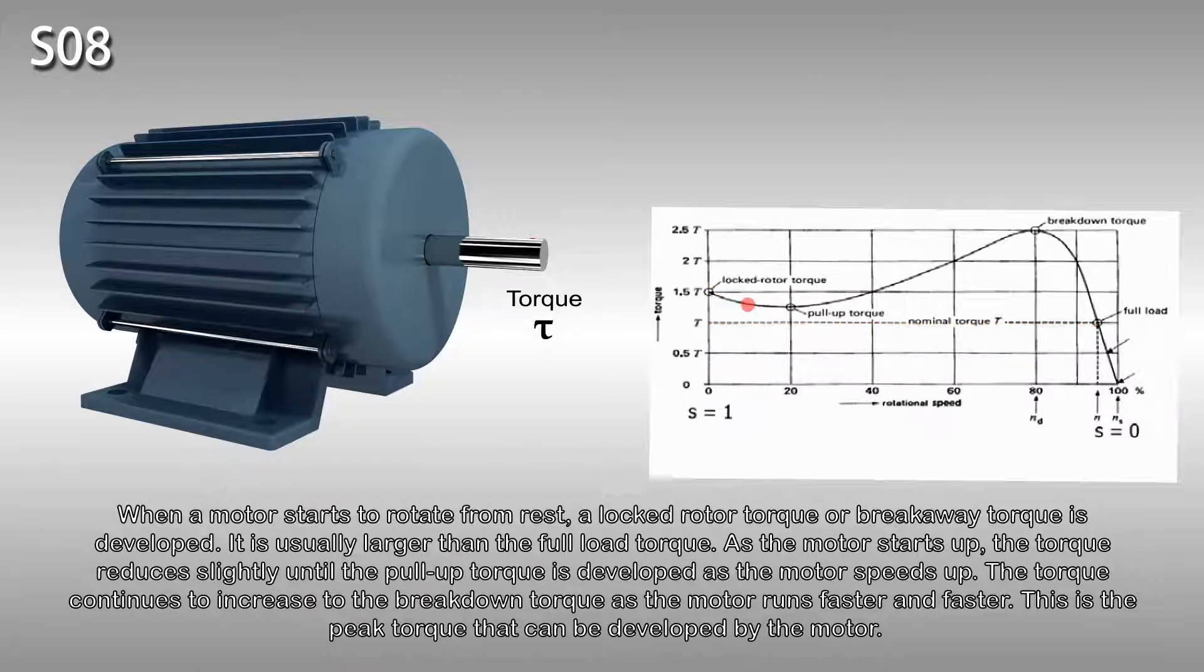As the motor starts up, the torque reduces slightly until the pull-up torque is developed as the motor speeds up. The torque continues to increase to the breakdown torque as the motor runs faster and faster. This is the peak torque that can be developed by the motor.